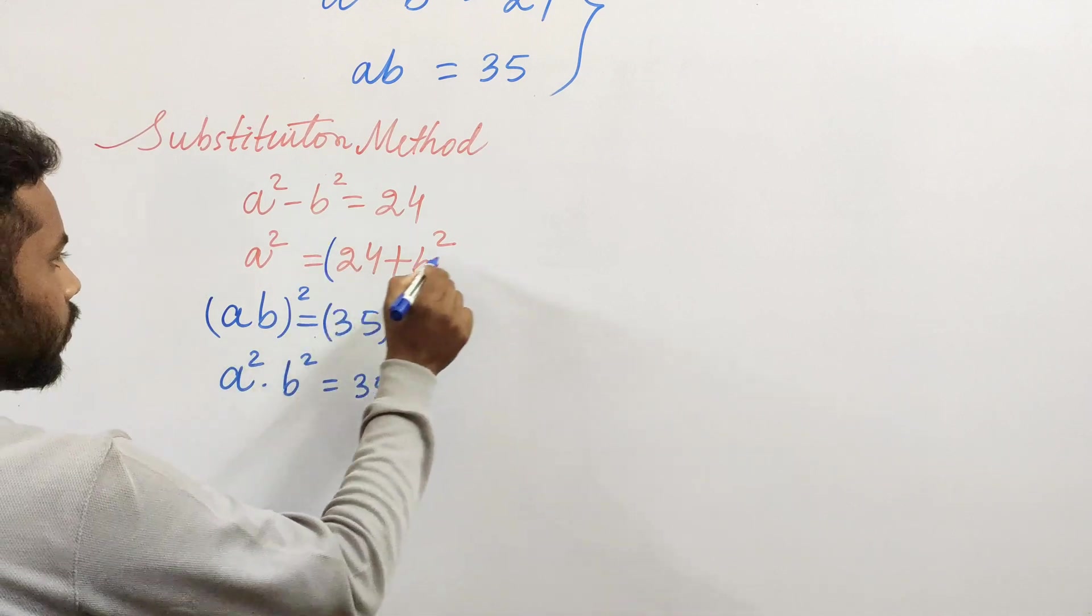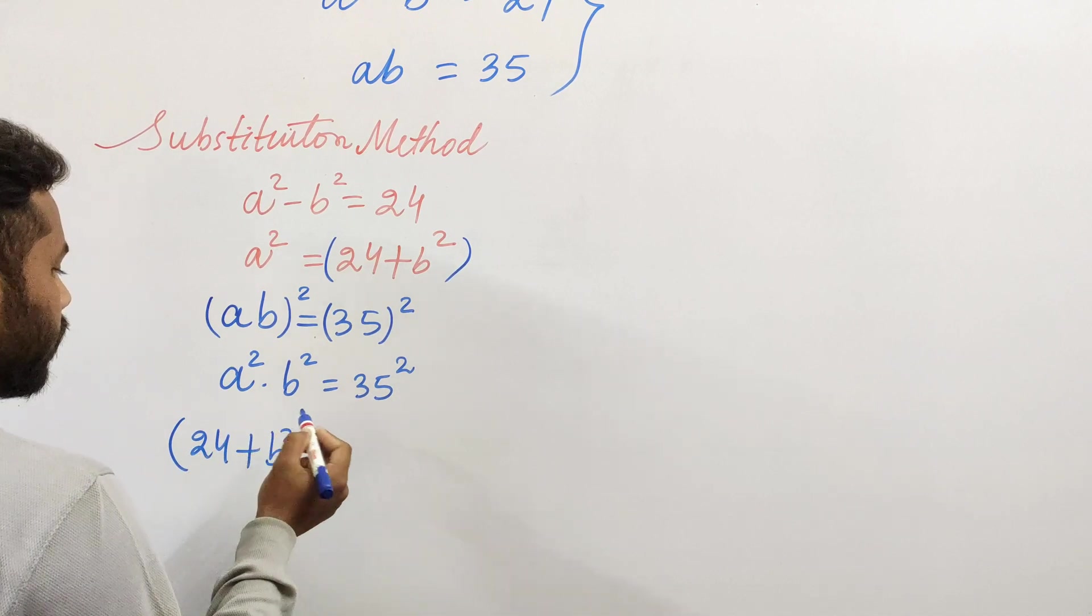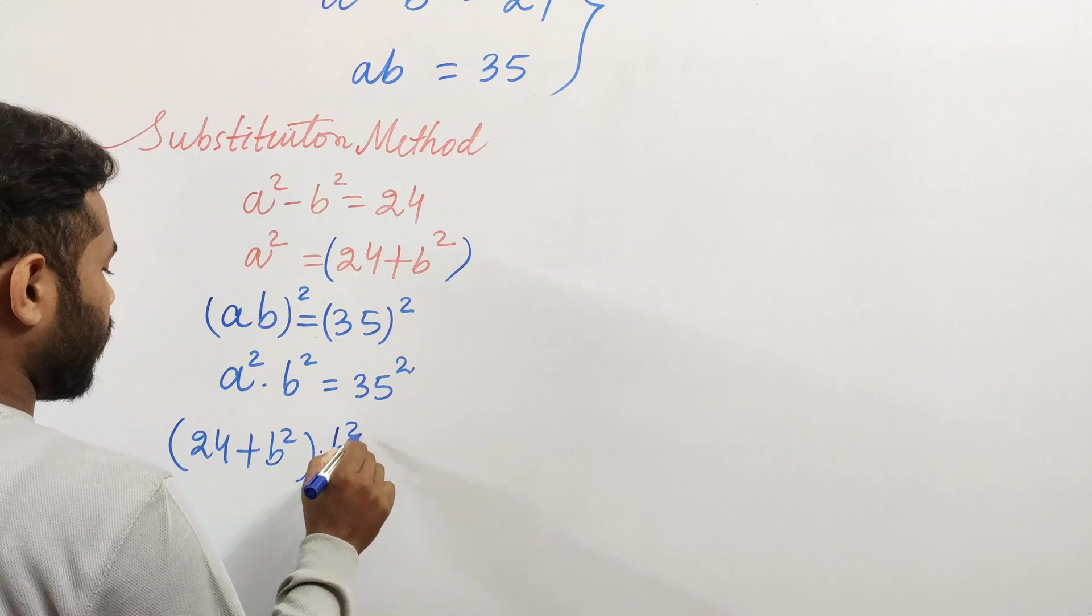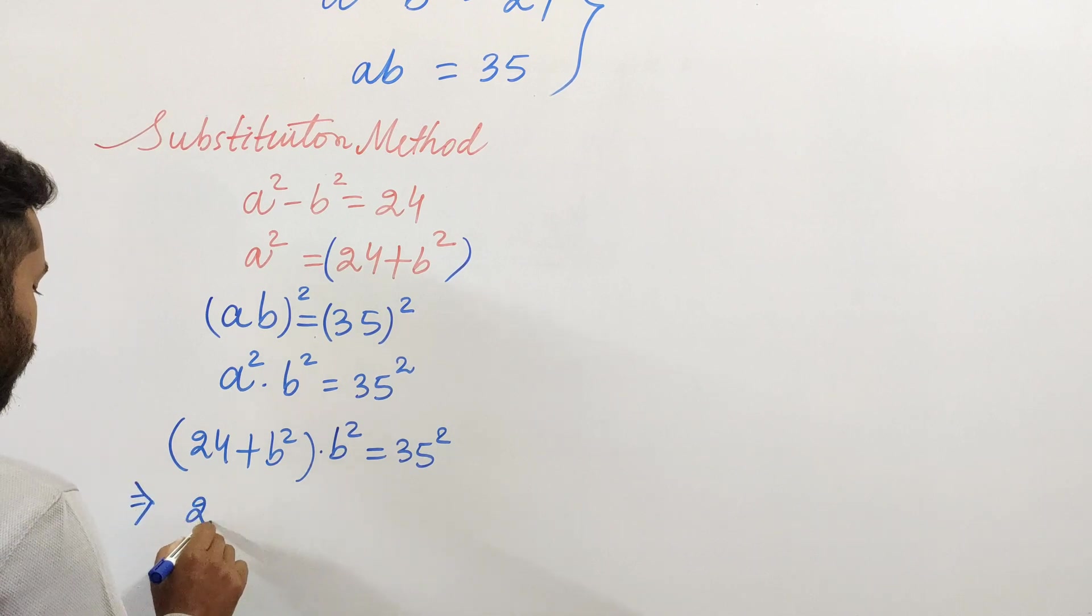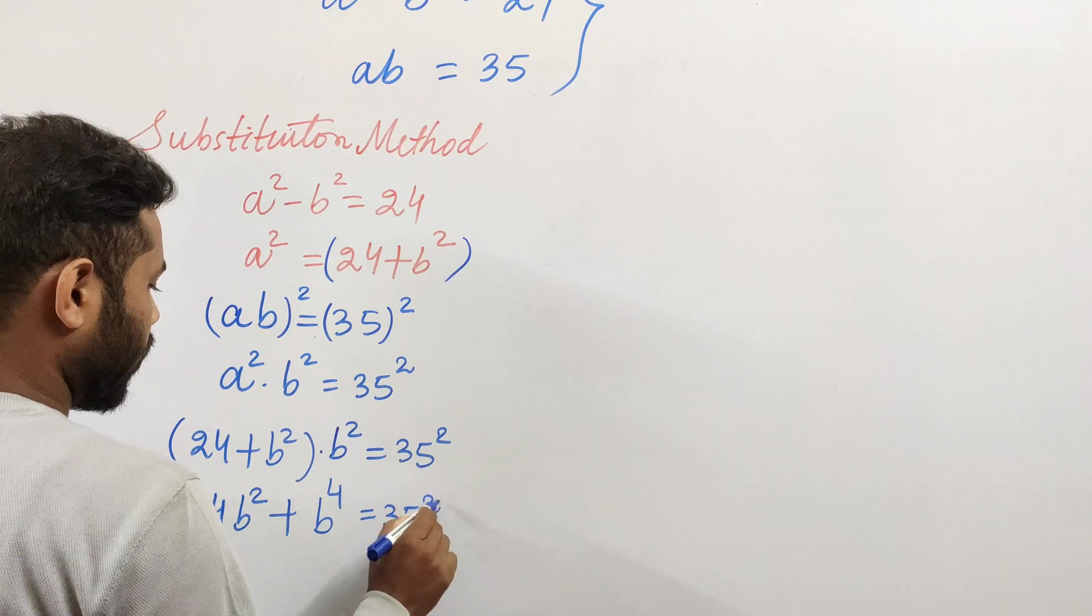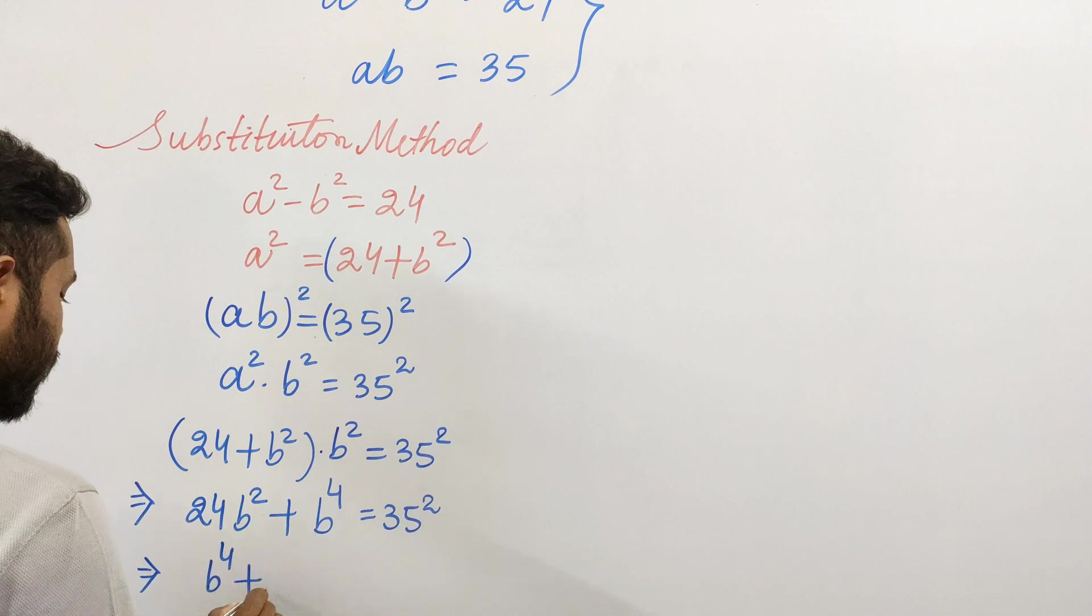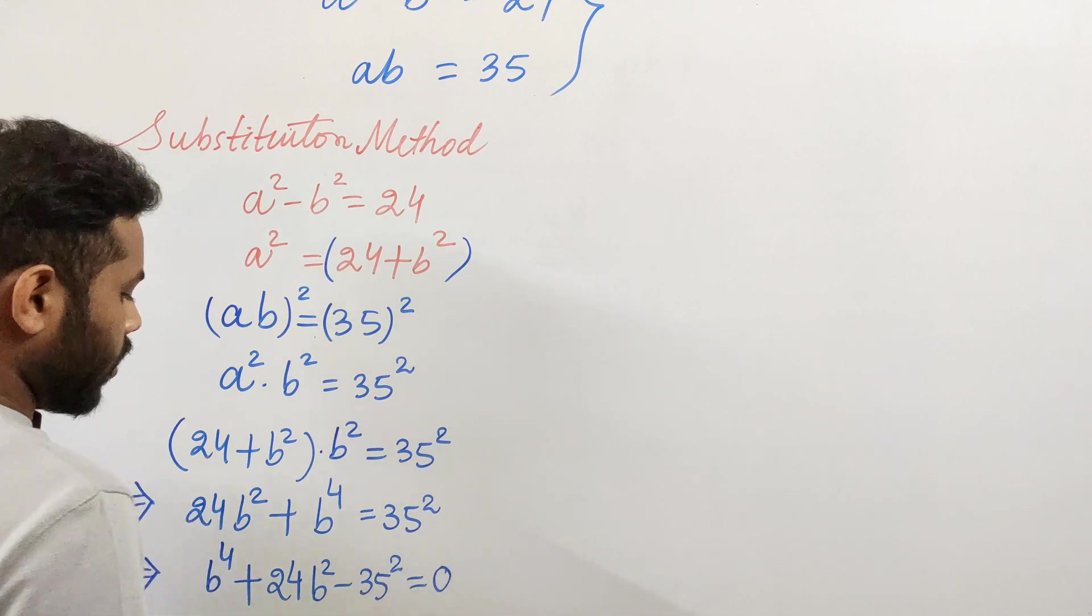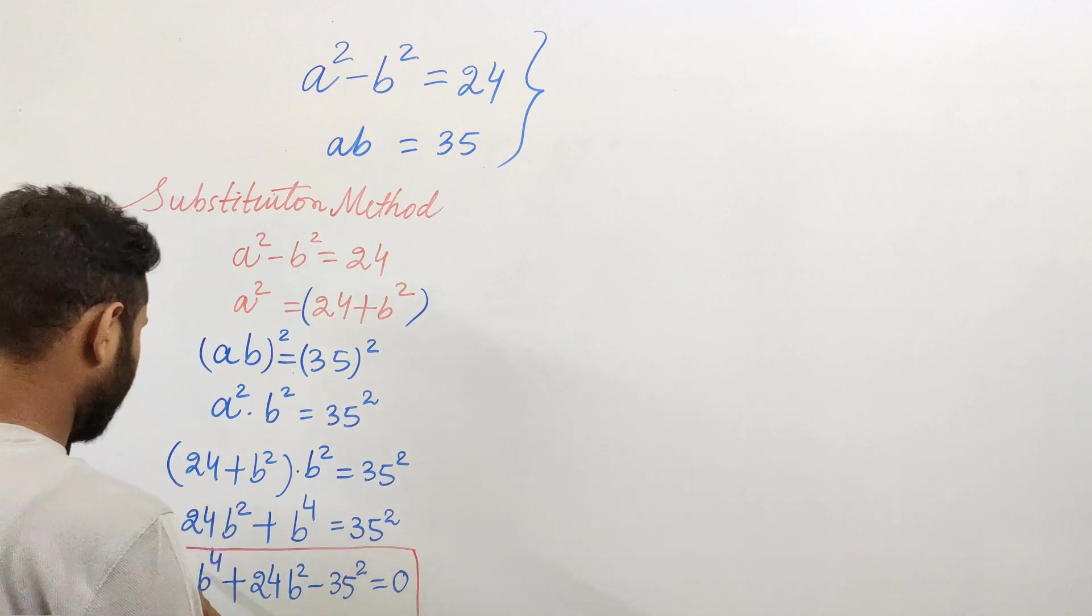So a² = 24 + b², and this times b² equals 35². If you open this bracket, you get 24b² + b⁴ = 35². And now you can see what this is—this is going to be a quadratic equation: b⁴ + 24b² - 35² = 0. This is nothing but a quadratic equation.